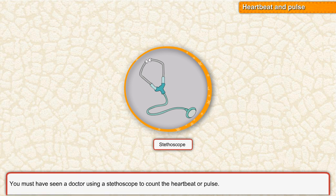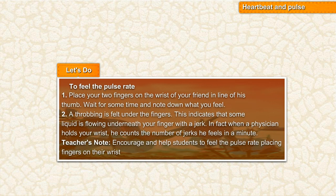You must have seen a doctor using a stethoscope to count the heartbeat or pulse. Let's do an activity to feel the pulse rate. Place your two fingers on the wrist of your friend in line with his thumb. Wait for some time and note down what you feel. A throbbing is felt under the fingers, indicating that some liquid is flowing underneath with a jerk. When a physician holds your wrist, he counts the number of jerks he feels in a minute.